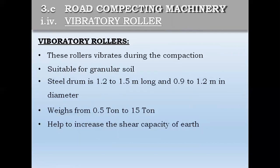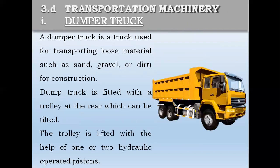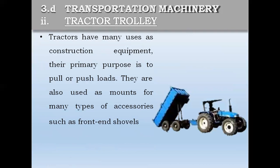Now we see the dumper. If we need to move earth from one place to another, we use the dumper truck. A dumper truck is a truck used for transporting loose materials such as sand, gravel, or dirt for construction. Another transport equipment is the tractor trolley, which is also used as moving or transport equipment when you need to transport material from one place to another.